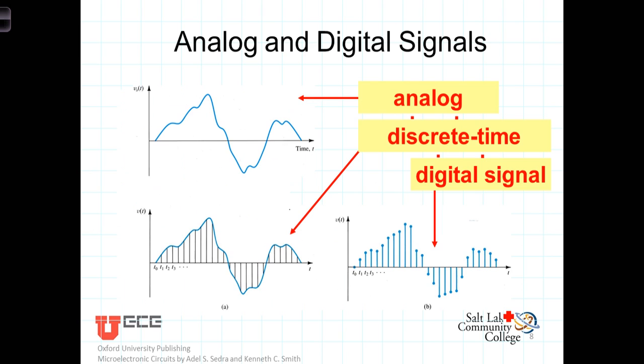For completeness in our discussion of signals, let's briefly discuss analog, digital, and binary signals. An analog signal is a signal that is continuous both in time and amplitude. Generally, signals arising from natural processes will be analog in nature.